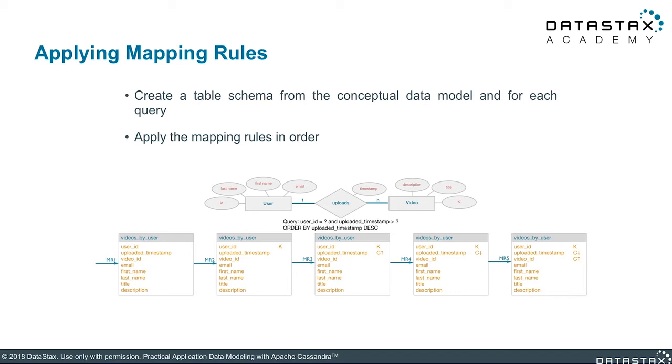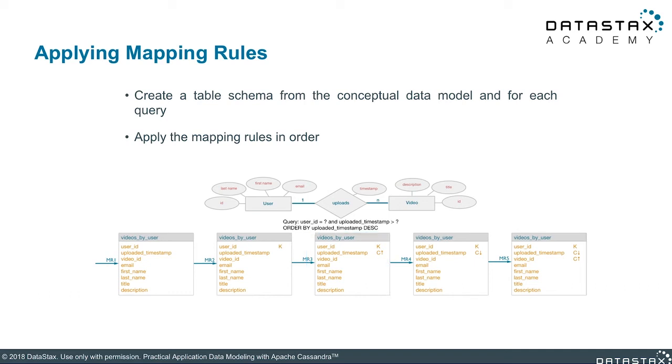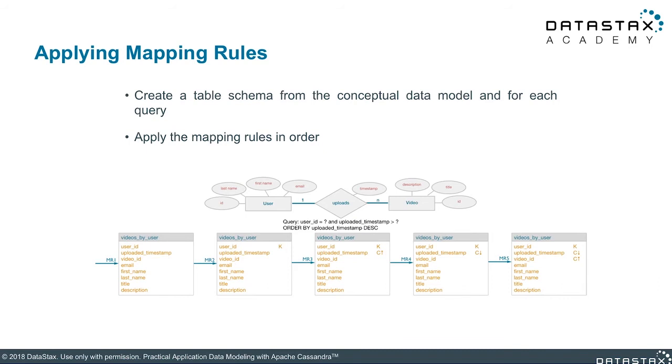Next, mapping rule number three: identify your inequality search attributes — that means greater than, less than, greater than or equal to, less than or equal to. We're not saying equals but we're doing a range. In this case we're looking for videos with an uploaded timestamp greater than some value. Think about this in terms of clustering columns: we first query on the partition key and then search through the clustering columns, so we can do range queries on clustering column values. Thus we make uploaded timestamp a clustering column following our user ID partition key.